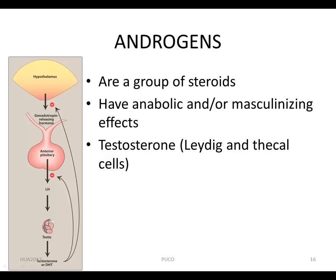In adult males, testosterone secretion by Leydig cells is controlled by gonadotropin-releasing hormone from the hypothalamus, which stimulates the anterior pituitary gland to secrete FSH and LH. Luteinizing hormone stimulates steroidogenesis in the Leydig cells, whereas follicle-stimulating hormone is necessary for spermatogenesis. Testosterone and its active metabolite DHT inhibit production of these trophic hormones through a negative feedback loop, thus regulating testosterone production.